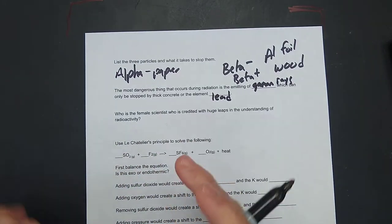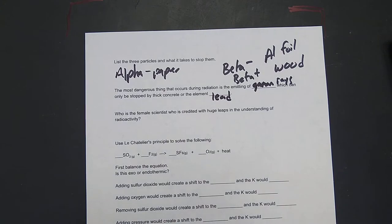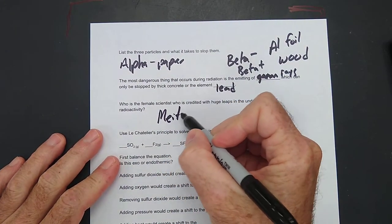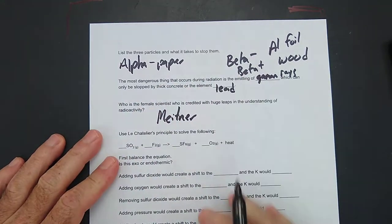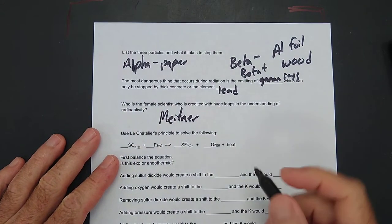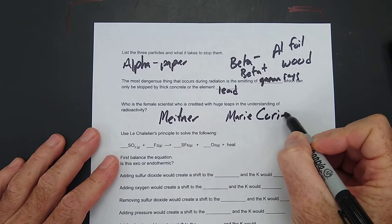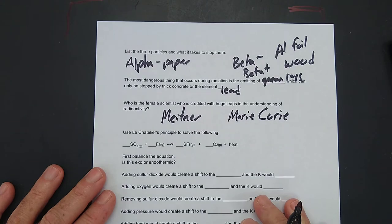Who is the female scientist who is credited with huge leaps in the understanding of radioactivity? Well, one, there's Lise Meitner, but that's not who I was asking about. The one we studied the most was Marie Curie, Madame Curie. All right.